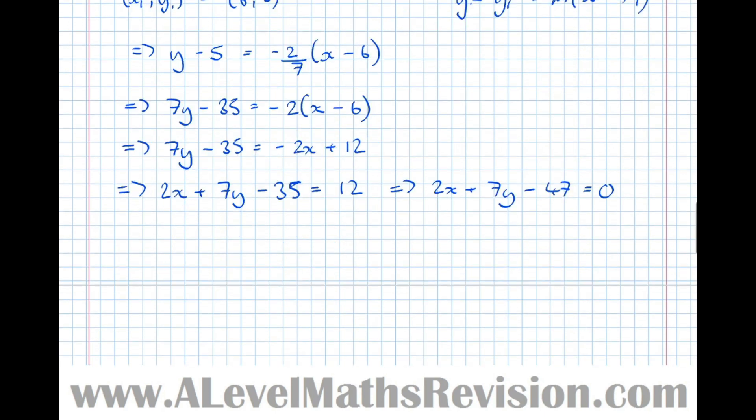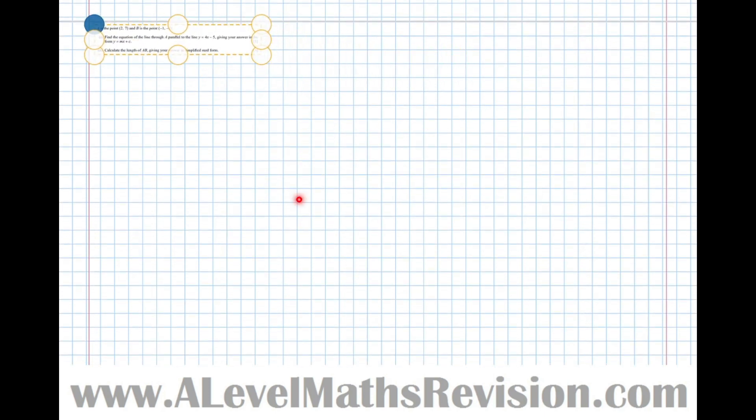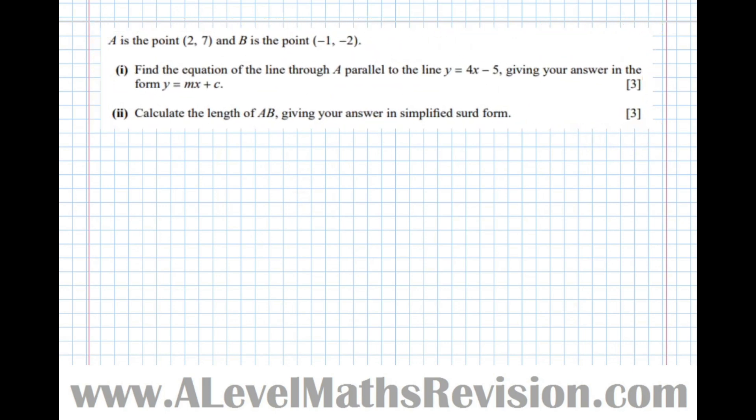Let's look at an exam-style question before we finish. A is the point 2, 7, and B is the point minus 1, minus 2. Find the equation of the line through A parallel to the line y equals 4x minus 5, giving your answer in the form y equals mx plus c. So x1, y1 equals 2, 7. The gradient of the line we need - we're told it's parallel to y equals 4x minus 5. That word parallel means has the same gradient as. So we can read off that the gradient is 4.